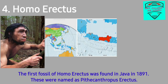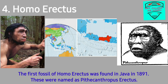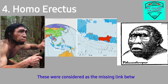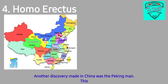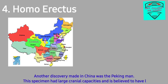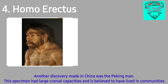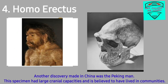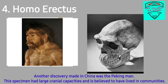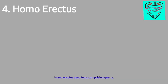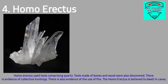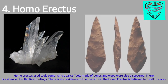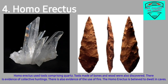The fourth stage is Homo erectus. The first fossil of Homo erectus was found in Java in 1891 and was named Pithecanthropus erectus, considered the missing link between man and apes. Another discovery made in China was the Peking Man, which had large cranial capacities and is believed to have lived in communities.